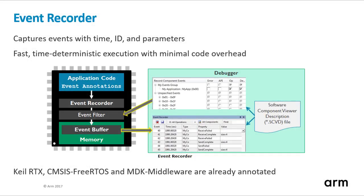Keil MDK has several unique debug features. For example, the event recorder, which provides high-level visibility into dynamic code execution. The event recorder component equips developers with an API for event annotations in the application code that are stored in a circular buffer while the program is running.